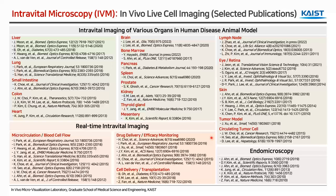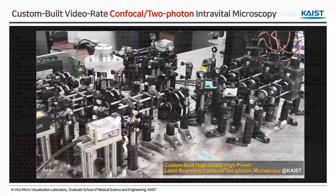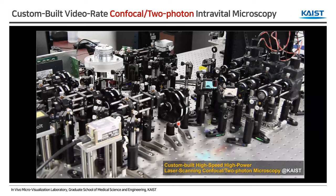These are selected publications from our group. We have successfully imaged various organs and tissues and done extensive functional imaging to show microcirculation, blood flow, drug delivery, efficacy monitoring, and cell delivery and transplantation models. This is a very powerful and useful system for providing live images in anesthetized mouse models.